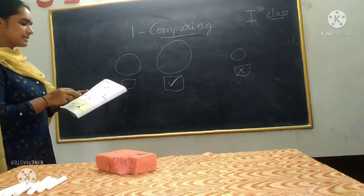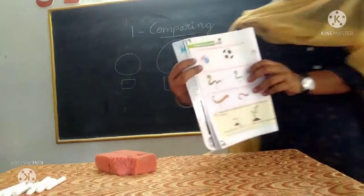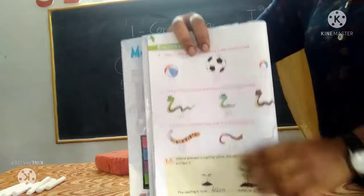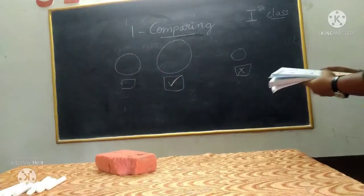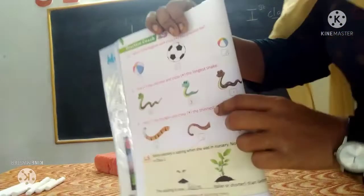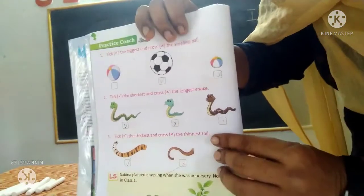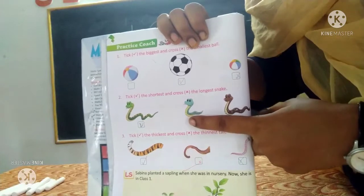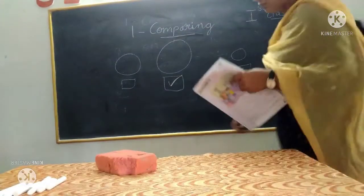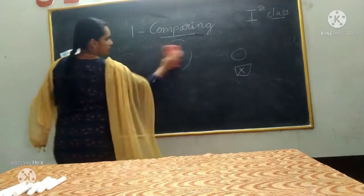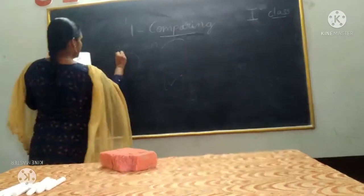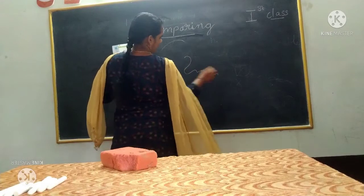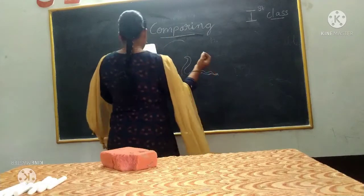Next question: tick the shortest. Which is the shortest among the three snakes they gave you? The second one — it is the shortest — tick it.